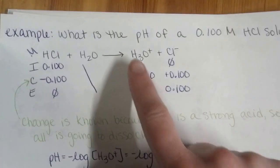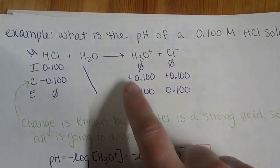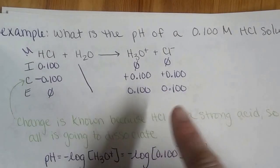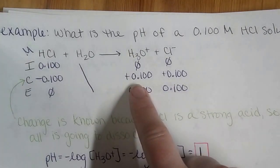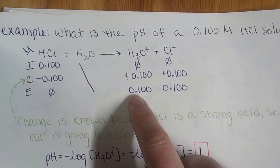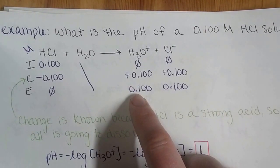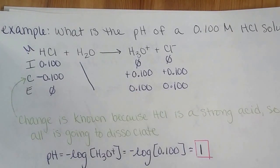And then our stoichiometry, we have a 1 to 1 molar ratio to the HCl, so we have plus 0.1, plus 0.1. So we have our final concentration of H3O+ to get our pH.